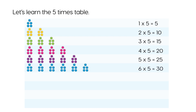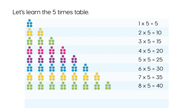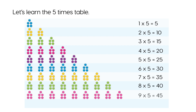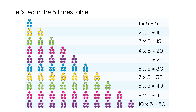Six times five is thirty. Seven times five is thirty-five. Eight times five is forty. Nine times five is forty-five. Ten times five is fifty.